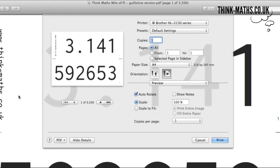When you print the Mile of Pi, you need to make sure that the printer uses 100% scale and doesn't shrink the image to fit on the page. This should be a setting in the print dialog box.